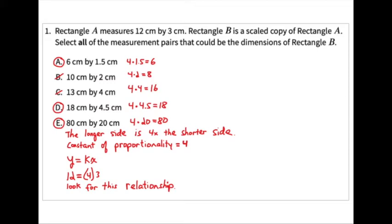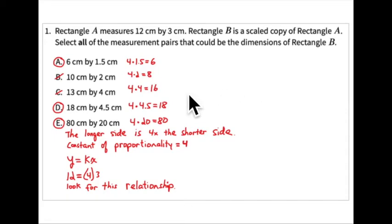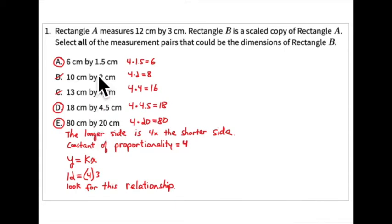This is practice problem number one for lesson one. The problem states that rectangle A measures 12 centimeters by 3 centimeters — length 12 cm, width 3 cm. Rectangle B is a scaled copy of rectangle A. We need to select all measurement pairs that could be the dimensions of rectangle B. For a scaled copy, you multiply the length and the width by the same factor.